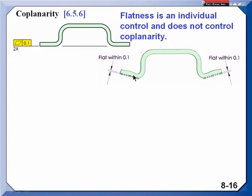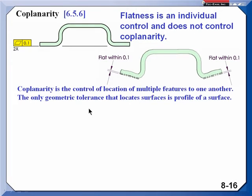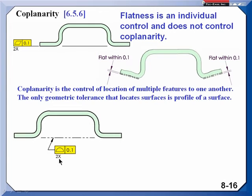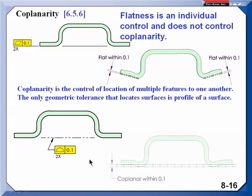If I want these two surfaces to act like one, be located within a pattern of two, then I'd have to use profile of a surface. So here I'm saying there's two surfaces or 2x, profile 0.1, and now these both must meet their tolerances simultaneously.